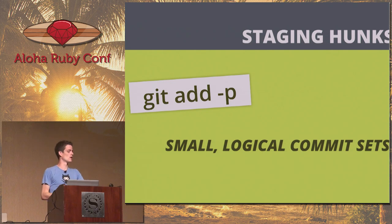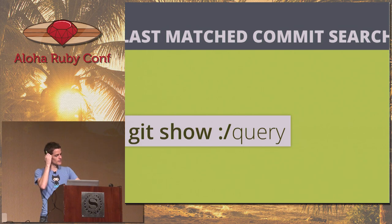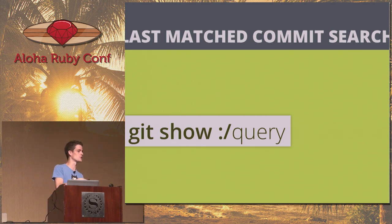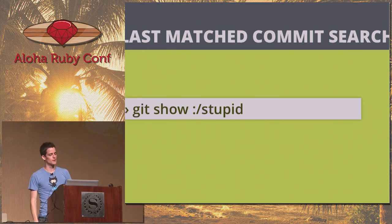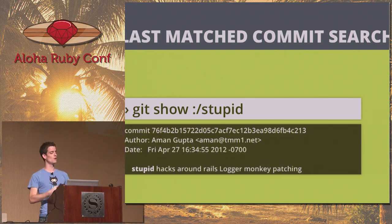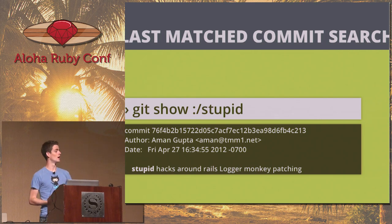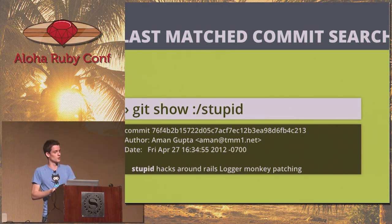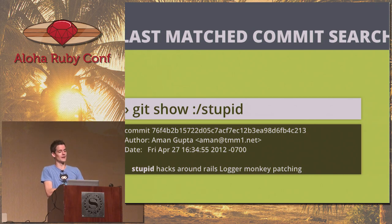Git show :/query is really cool — it searches through your git log for the last commit message that matches that search. On the GitHub codebase, if I say git show :/stupid, it'll find the commit where Rails logger was called stupid on April 27th. I use this when I know a particular commit happened and just want the last matching one quickly.